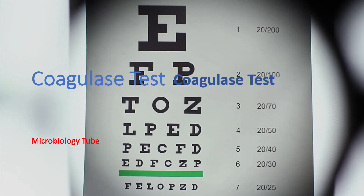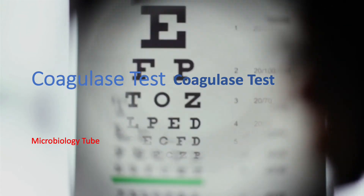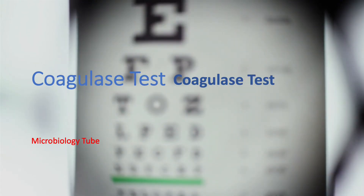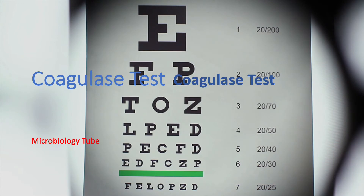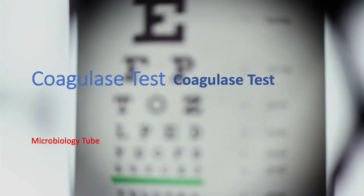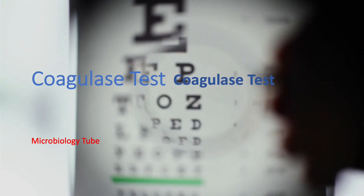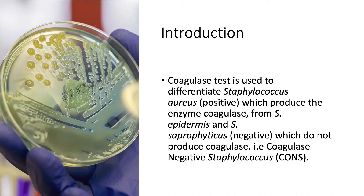Welcome to the next episode of the Microbiology Tube. Today we will be talking about the coagulase test. The coagulase test is one of the most common tests in the microbiology laboratory. It is usually done to differentiate the coagulase-positive Staphylococcus aureus from other Staphylococcus species such as Staphylococcus epidermidis and Staphylococcus saprophyticus.